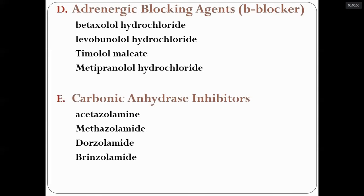Sympathomimetic drugs include dipivalyl epinephrine and epinephrine borate. Adrenergic blocking agents — beta blockers — include betaxolol hydrochloride, levobunolol hydrochloride, timolol maleate, and metipranolol hydrochloride. These are very important drugs which we use frequently. Carbonic anhydrase inhibitors are also used frequently: acetazolamide, methazolamide, dorzolamide, and brinzolamide.